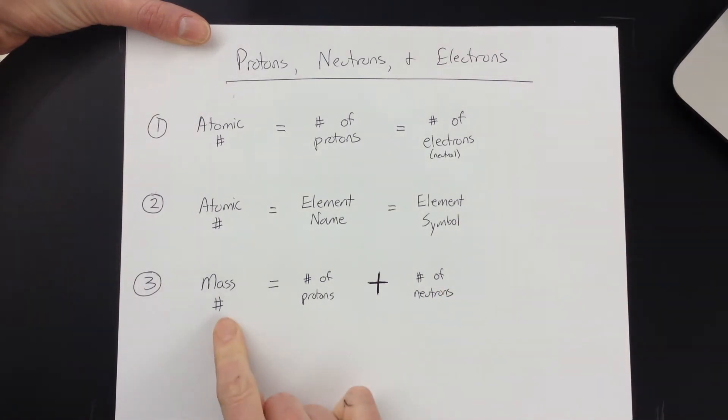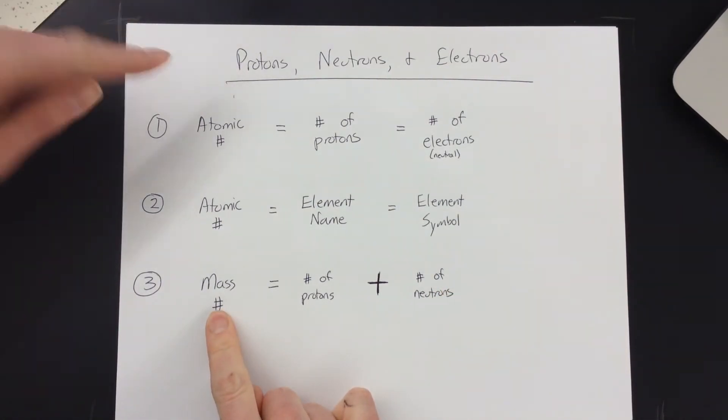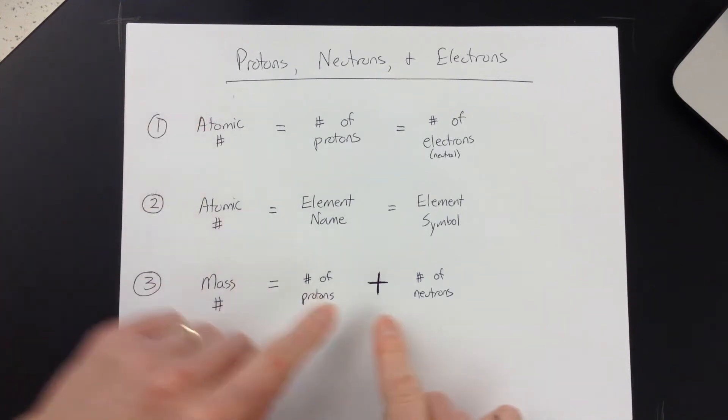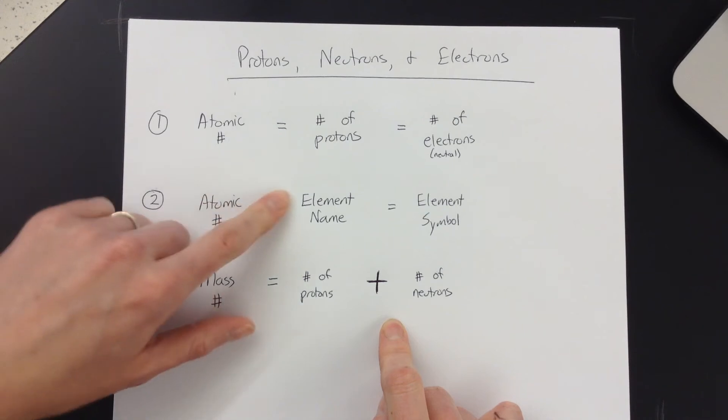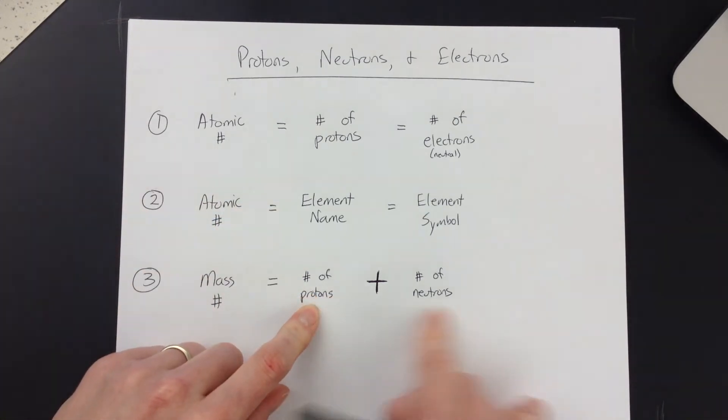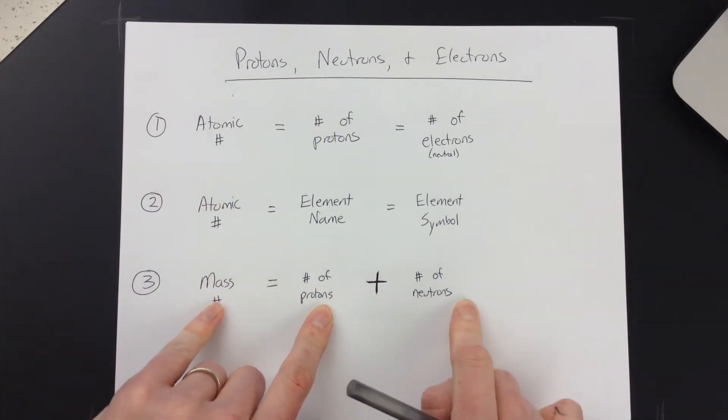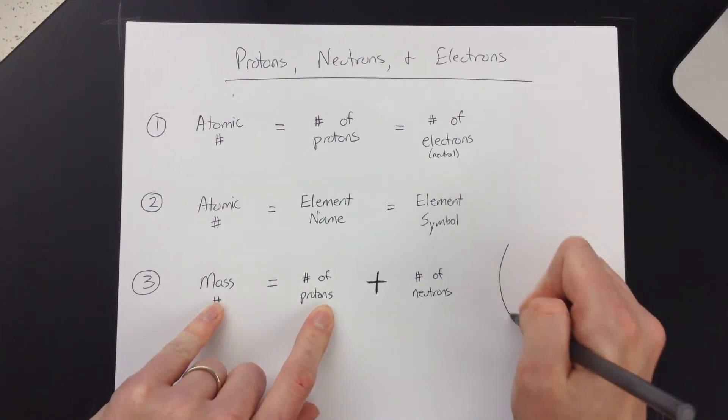That means if you know the mass number, but you don't know any of these up here, you're going to have to do some subtraction. Actually, you wouldn't know the mass number and not one of these. You'd need one, if you've got two of these, you'll have to do some math. So a little side note here,